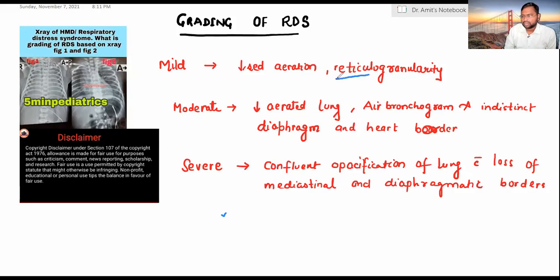What is the meaning of reticulogranularity? Suppose we have numerous alveoli here. We have alveolar ducts and terminal bronchioles. In this condition, the alveoli are collapsed and air is present in the alveolar ducts and terminal bronchioles. This is the meaning of reticulogranularity.